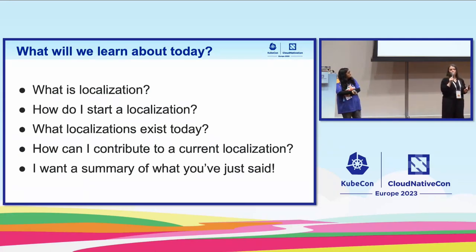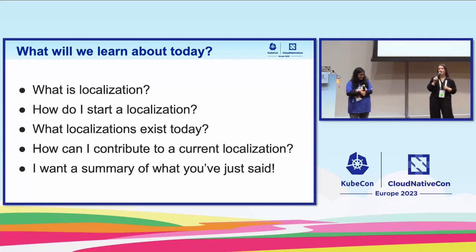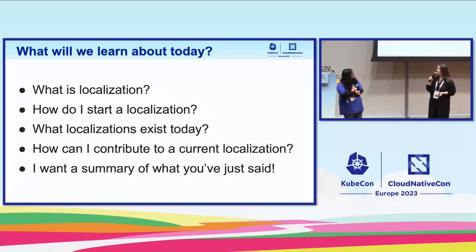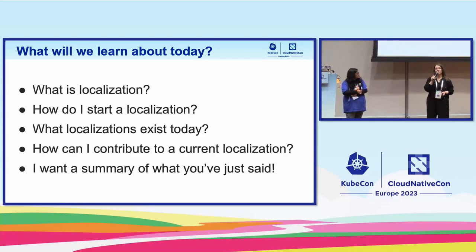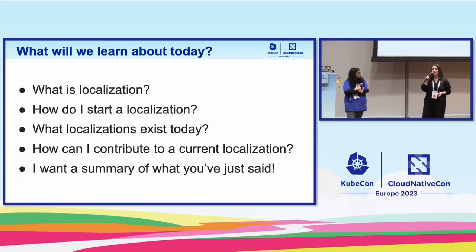To get started today, we want to go through what you're about to learn. First, what is localization? We talk about translation, but it's really more than that. We'll go into how you can start a localization, and we'll also look at what localizations exist and how you can contribute to those that exist currently today. English is a localization too — it's the default language for our docs, but it's also somewhere where you can get started. And finally, we'll summarize everything and give you a quick rundown of where you can find us.